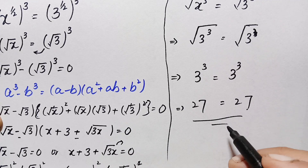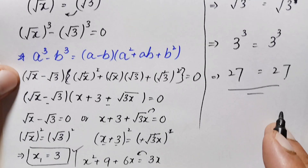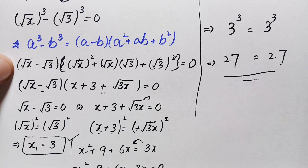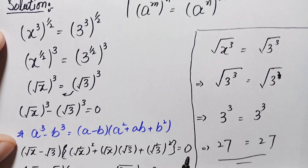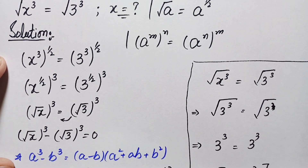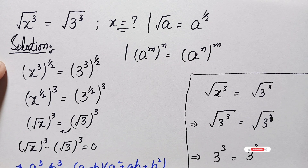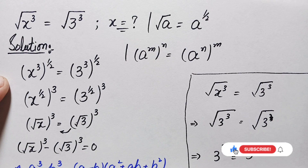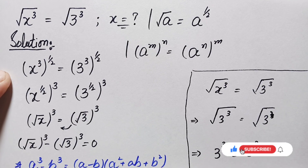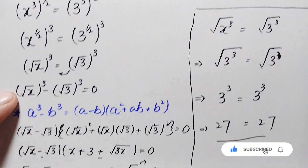Therefore x = 3 is the exact and correct real solution of this interesting algebra math problem. Don't forget to subscribe to the YouTube channel for more interesting radical and algebra problems. Thanks for watching.